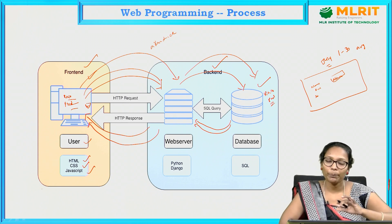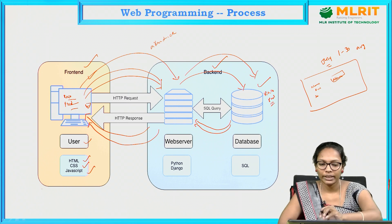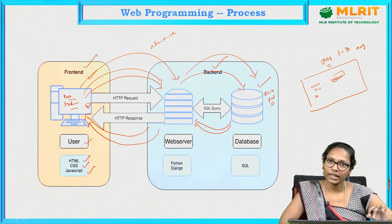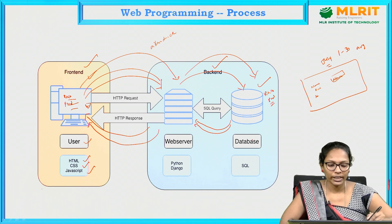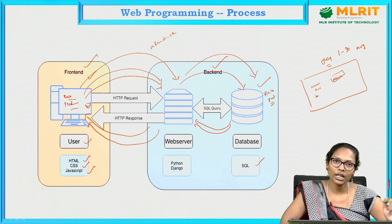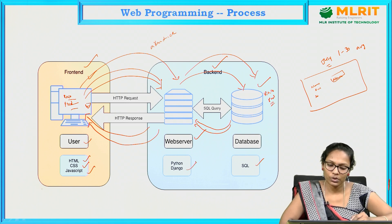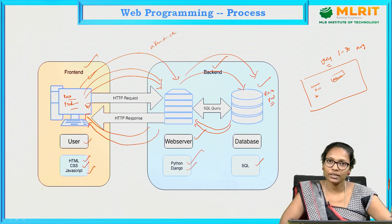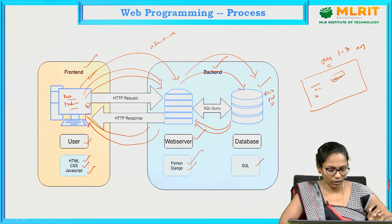This is the complete web programming process: front end, and back end which includes the server and database. The database may use SQL or NoSQL. For back end programming we can use Django, Python, Java, or PHP — we can change the technology according to our requirement.